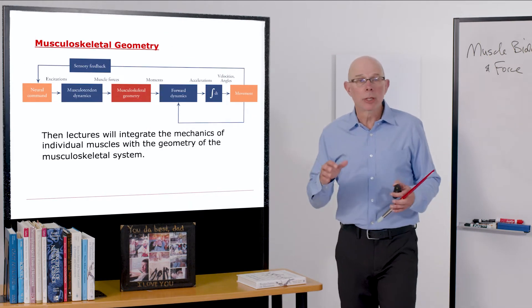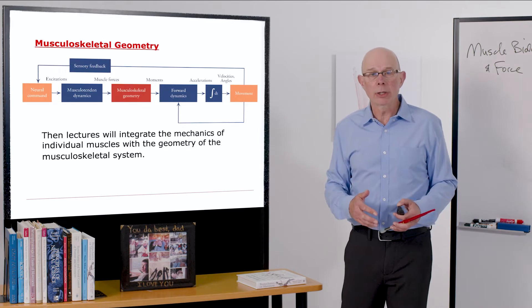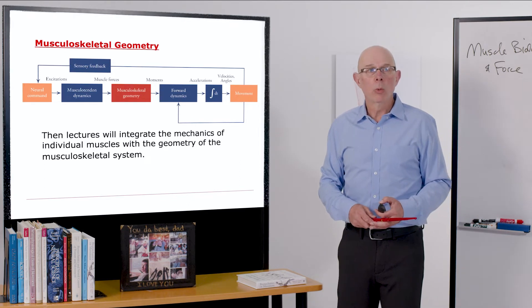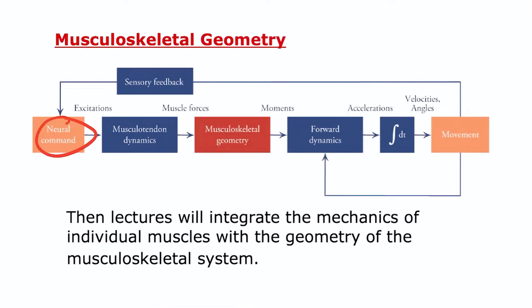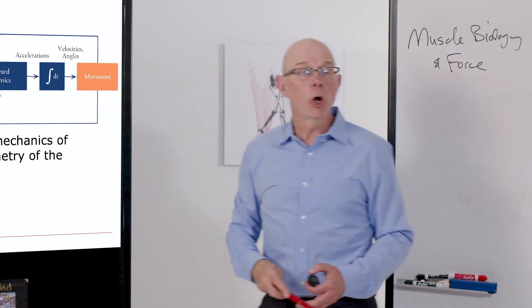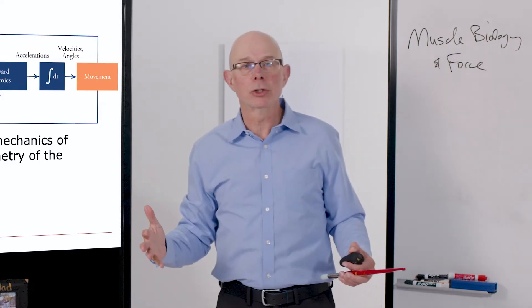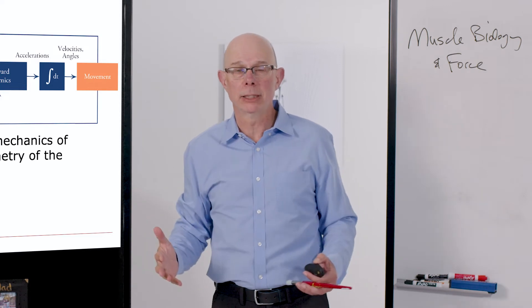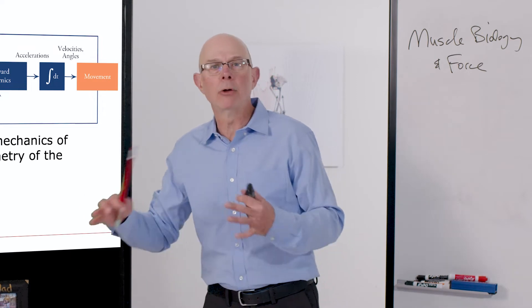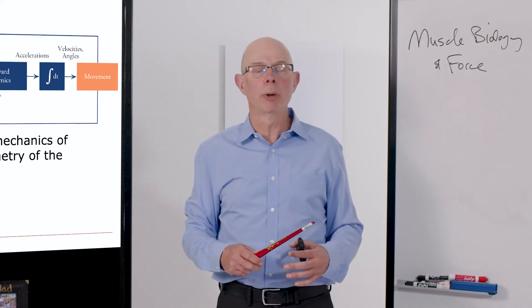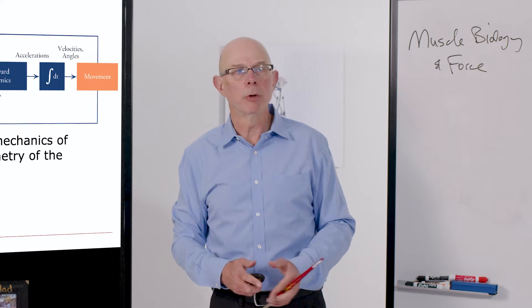Because muscles don't act in isolation, they operate in your skeletal system. We're going to talk about musculoskeletal geometry. Transfer neural command to muscle force. Those muscle forces then are transformed into joint moments through musculoskeletal geometry. Over the next set of lectures, in this production of movement section, we'll be talking about how to get from your brain out to muscle and down to your bones, how to transform your neural signals into human movement.